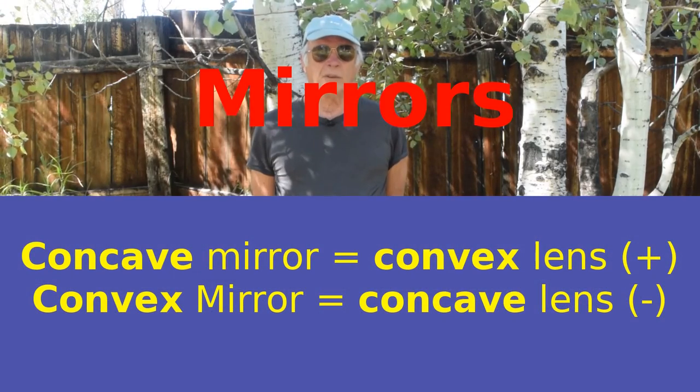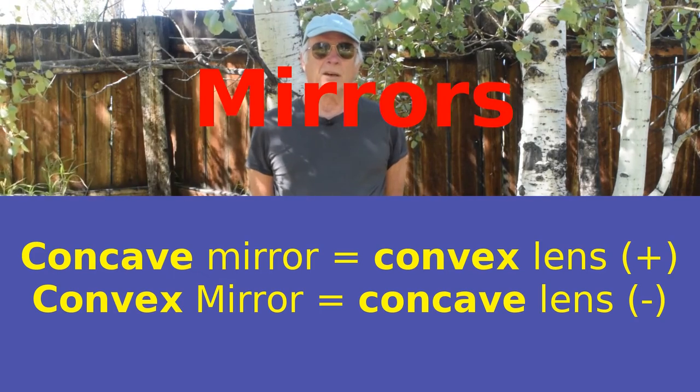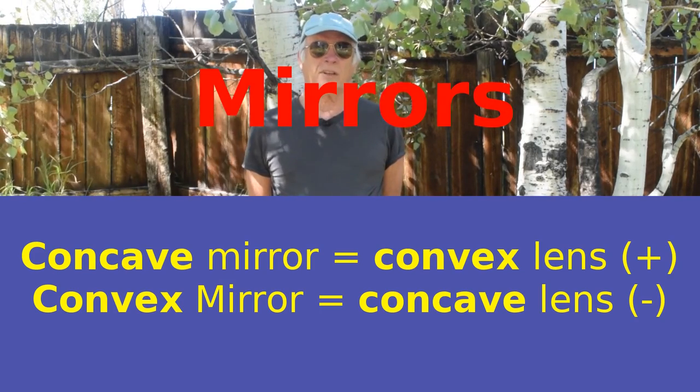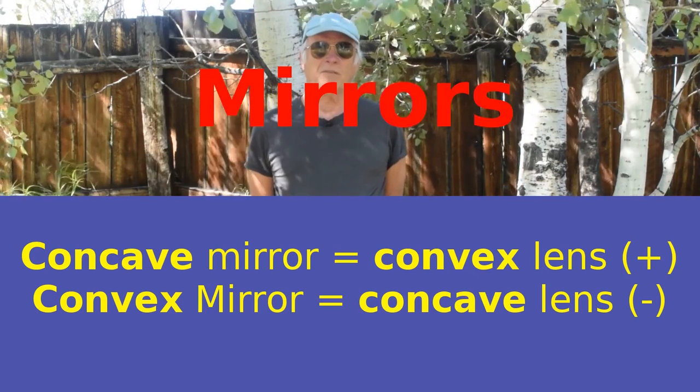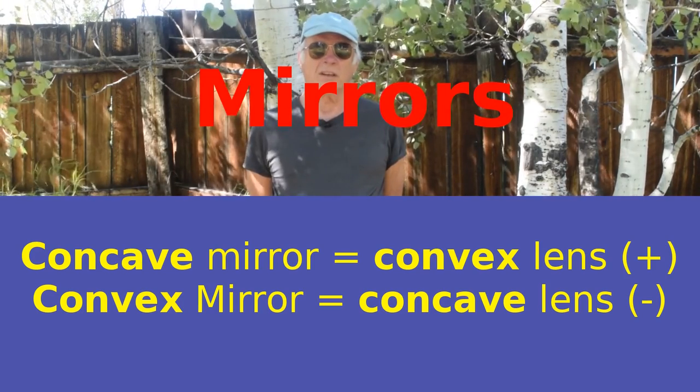Mirrors can also be made. The concave mirror acts like the convex lens, and the convex mirror acts like the concave lens.